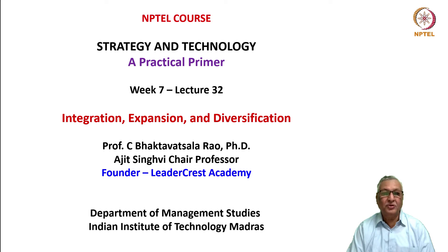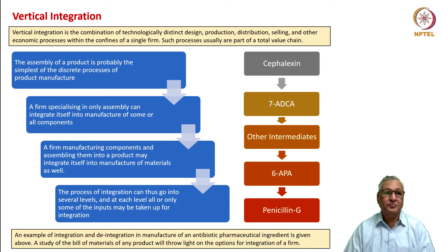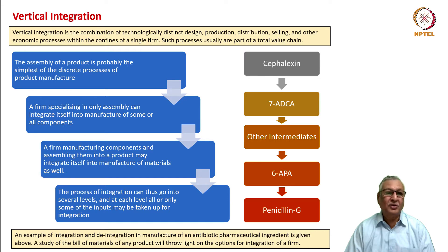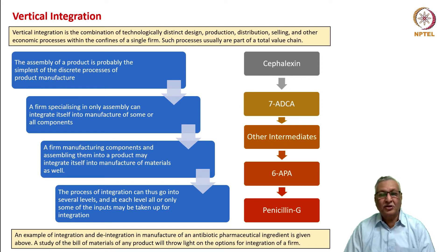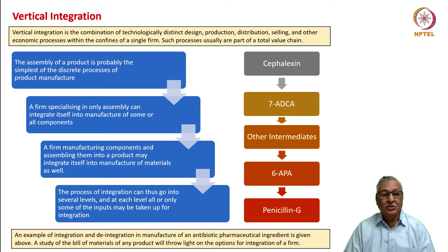These are strategic initiatives taken from time to time by companies trying to grow their businesses. Vertical integration is the combination of technologically distinct design, production, distribution, selling, and other economic processes within the confines of a single firm. Such processes are usually part of a total value chain. A firm specializing in only assembly can integrate into manufacture of some or all components, and the process can go into several layers.